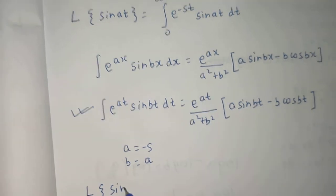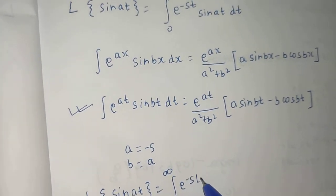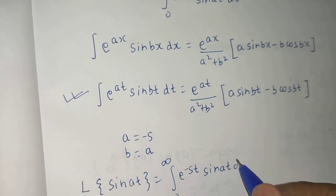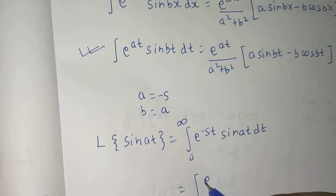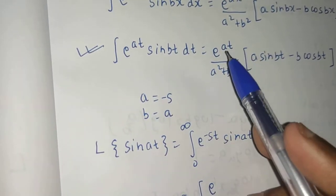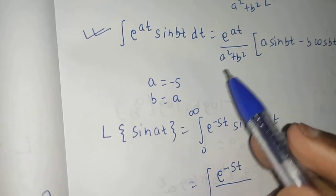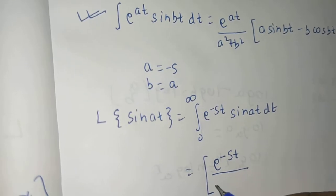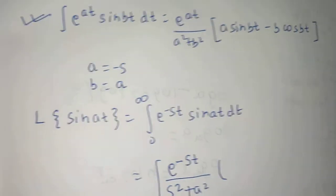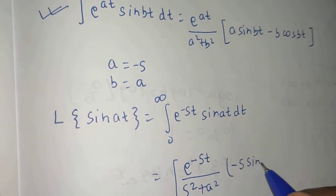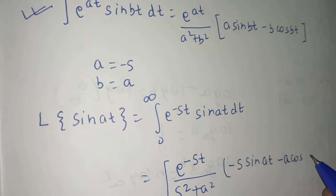So the Laplace of sine at is the integral from 0 to infinity of e to the power minus st times sine at dt. Applying the formula, this integration equals e to the power minus st divided by — since in place of a we have minus s, minus s whole squared is s squared — so s squared plus a squared, in brackets: minus s times sine at minus a times cos at, evaluated from 0 to infinity.